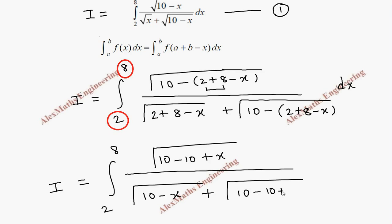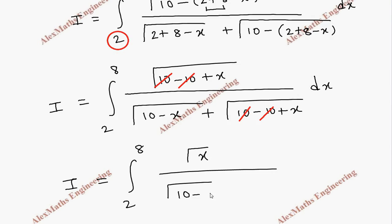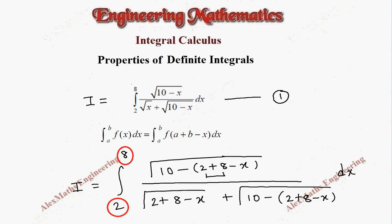After cancellation, 10 minus 10 gives zero, so we can simplify. The remaining expression is I equals integral from 2 to 8 of root(x) divided by root(10 minus x) plus root(x) dx. Let's call this equation 2.